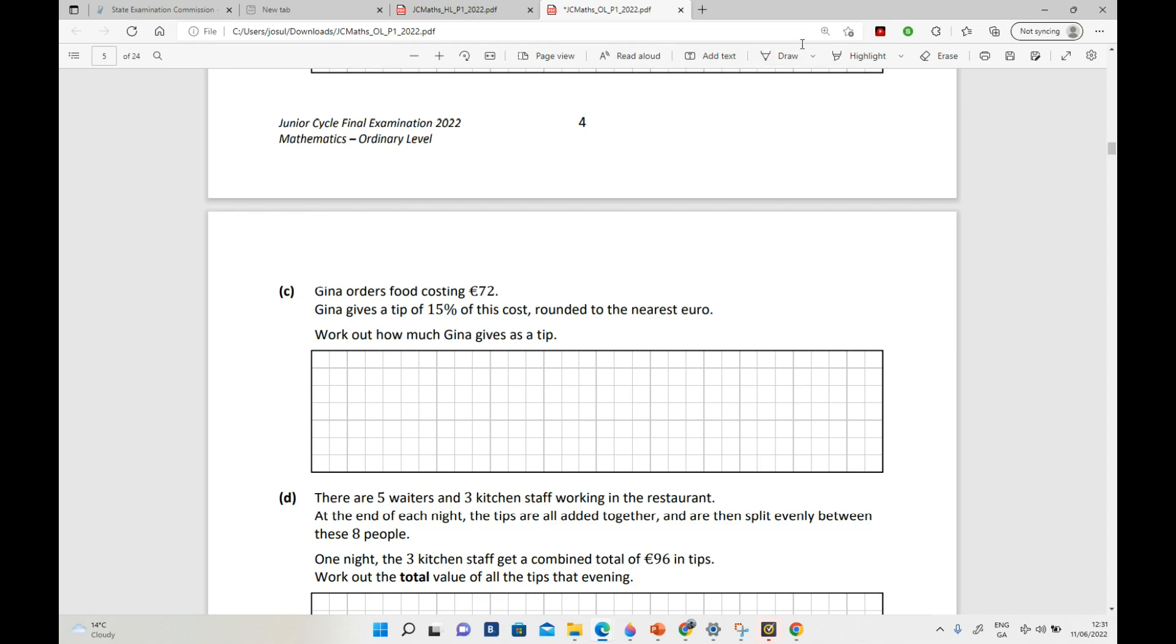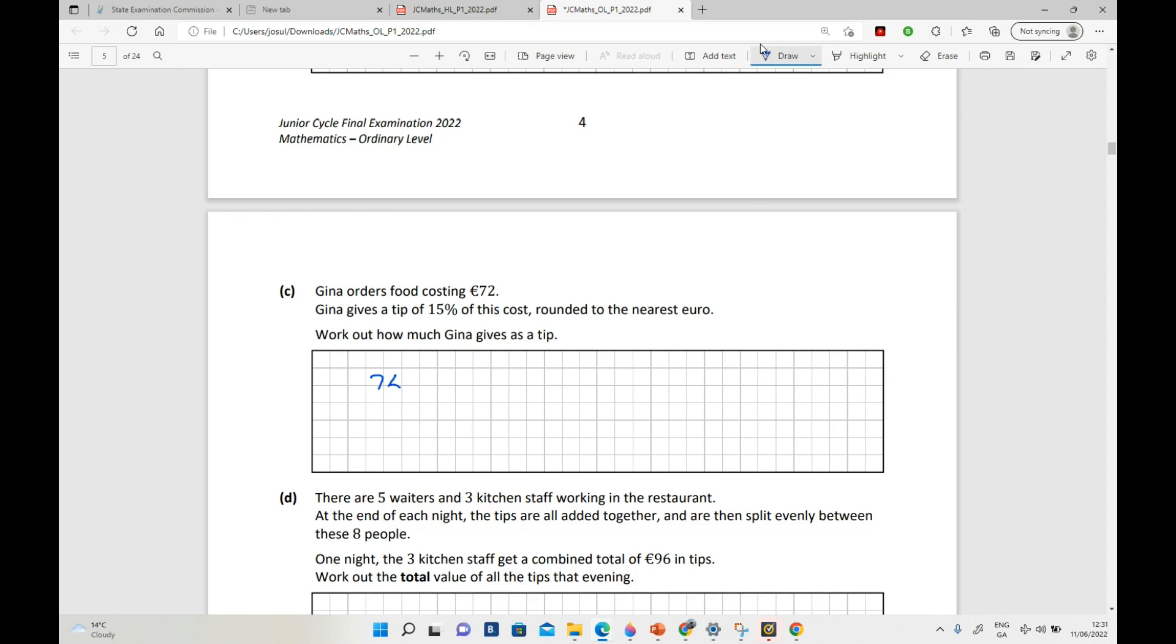She gives a tip of 15% of this cost, so of 72, rounded to the nearest euro. Okay, so let's have a look at that. So it's 72 euro and we need to get 15% of that. So 15% is 0.15 as a decimal. So 10% would be 0.1, 15% is 0.15. So the answer to that is 10.80.